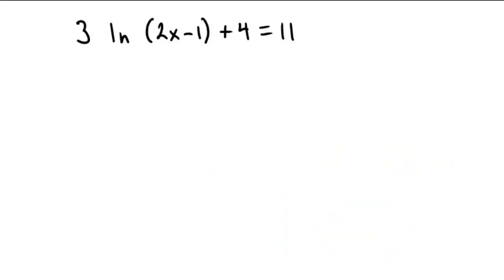Why don't you try one on your own here now. Try to do this one. 3 ln of 2x minus 1 plus 4 equals 11. So assuming you paused the video and gave this a good old shot, let's subtract 4 from both sides of this equation.